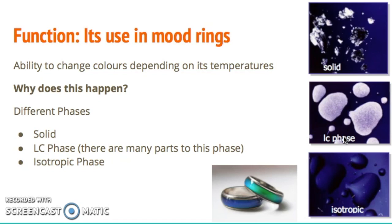Cholesteryl Benzoate acts a lot like a covalent network solid, although it is a liquid most of the time when it changes shape. When it goes into its isotropic phase, it is no longer considered a liquid crystal and looks and behaves like water.